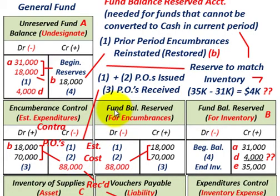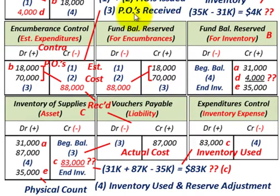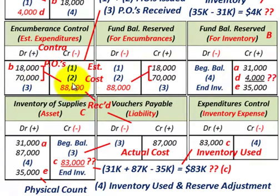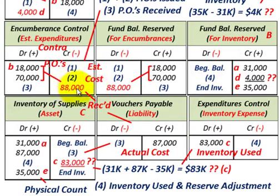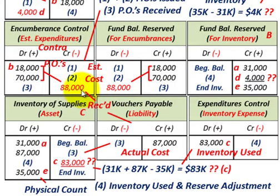Now the purchase orders are received, so we no longer need our encumbrance control. We credit it — reducing it — by the original estimated cost of $88,000. Then we debit fund balance reserved for encumbrances by $88,000, removing that reserve. Remember: once the POs are received, you always remove the encumbrance control at the estimated cost.